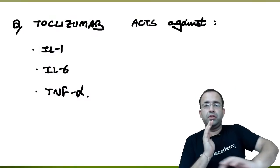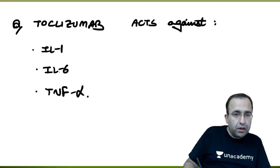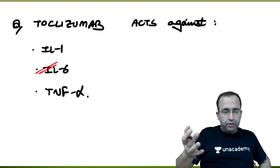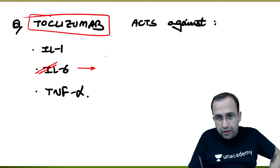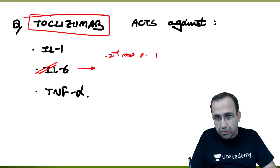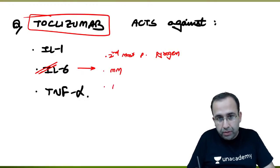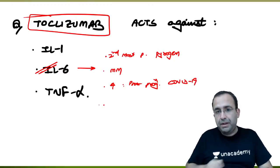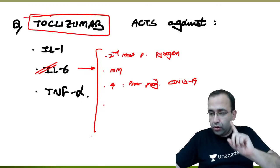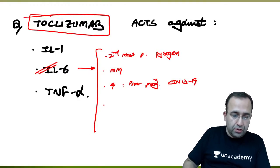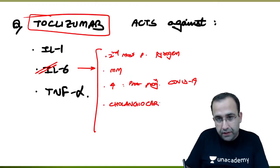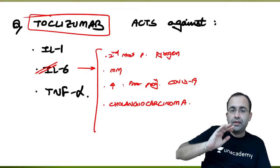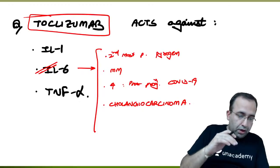Next question: tocilizumab acts against interleukin-6. IL-6 is the second most potent pyrogen, the main cytokine associated with multiple myeloma (increased levels = poor prognosis in COVID-19), and also the main cytokine associated with cholangiocarcinoma — malignancy of the biliary tract.